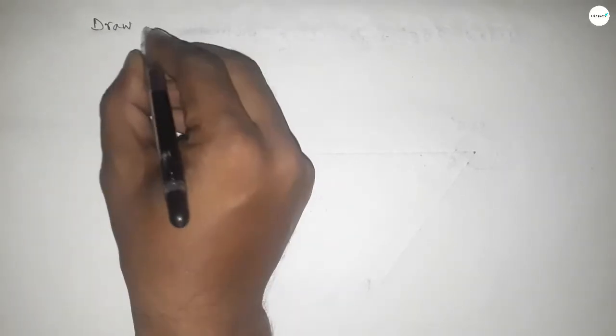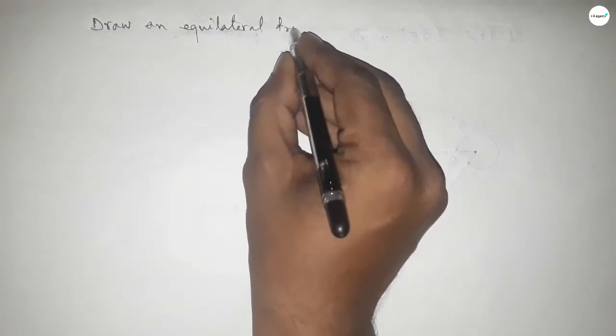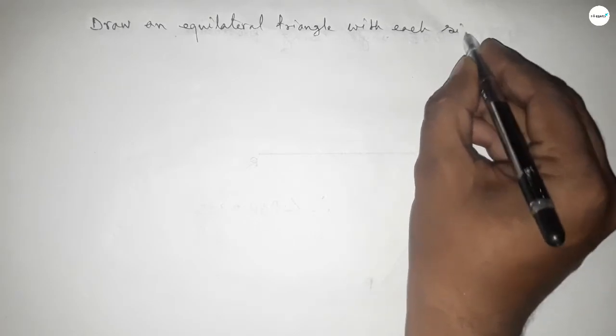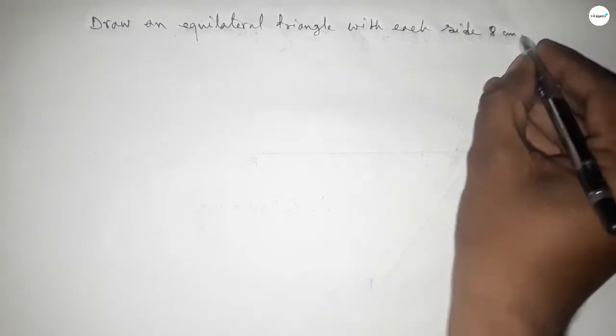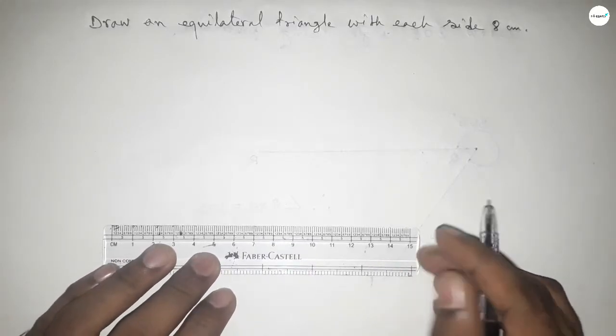Hi everyone, welcome to SSR Classes. Today in this video we have to draw an equilateral triangle with each side 8 centimeter. So let's start the video. First of all, we have to draw a line of length 8 centimeter.